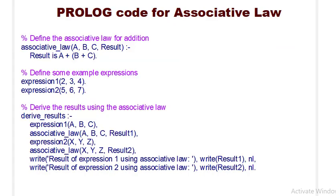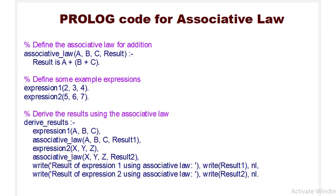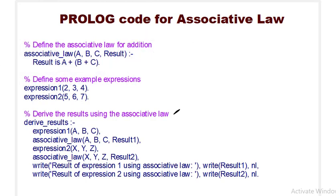Now let us see the Prolog code we will be implementing for the associative law. The lines in a lighter color are the comments. The first line defines the rule: associative_law(A, B, C, Result), where A, B, C are the inputs and Result is the output. This is defined using a colon and hyphen. So if we pass these four arguments, the result would be equal to A plus B plus C.